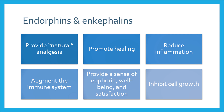Endorphins and enkephalins are often referred to as the body's natural painkillers since they work on opioid receptors to produce natural analgesia. They have also been shown to have other positive effects in the human body, such as promoting healing, reducing inflammation, augmenting the immune system, providing a sense of euphoria, well-being, and satisfaction, and finally inhibiting cell growth, which could be important in cancer.